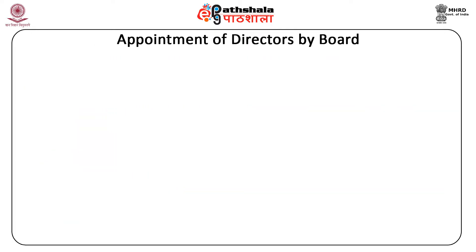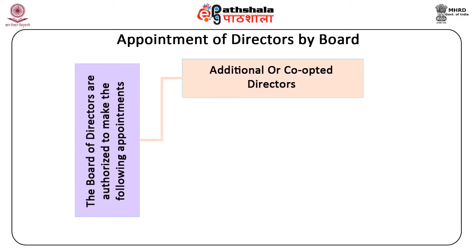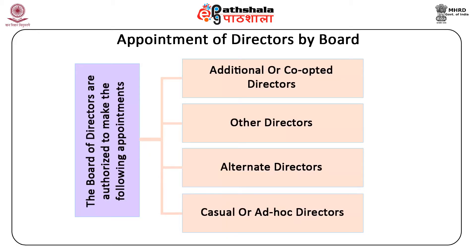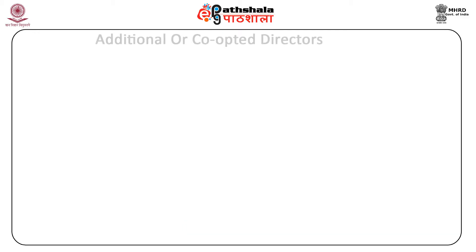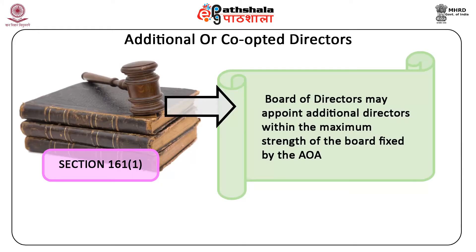Appointment of directors by the board: the board of directors is authorized to make the following appointments — additional or co-opted directors, other directors, alternate directors, and casual or ad hoc directors. Section 161, Subsection 1 provides that if authorized by the articles, the board of directors may appoint additional directors within the maximum strength of the board fixed by the articles of association. Such additional directors shall hold office only up to the commencement of the next annual general meeting.